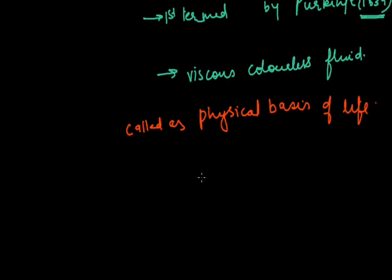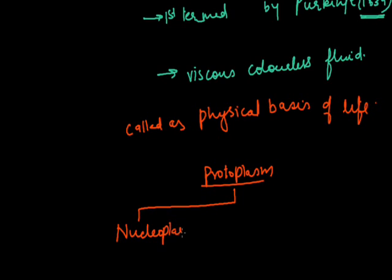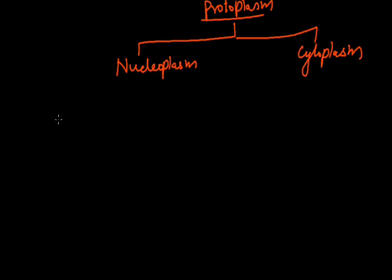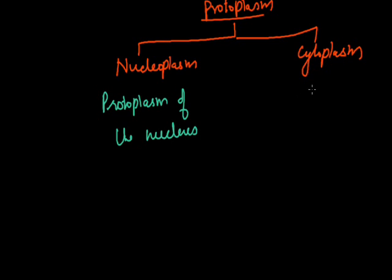Protoplasm can be differentiated into two regions. The first is called nucleoplasm, which is the protoplasm of the nucleus. The other is called cytoplasm, which is extra-nuclear protoplasm.